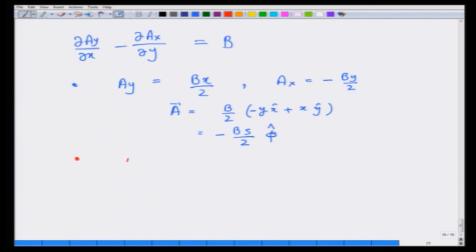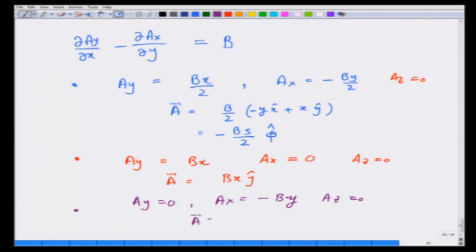Second possibility: I can have A_y equals B x, A_x equal to 0. Or third possibility: A_y equal to 0, A_x equals minus B y, and A_z equal to 0. So that A is minus B y in the x direction. All these three possibilities give me the same answer for B. As I said earlier, they will all differ by quantities which are gradients of one or the other quantity.